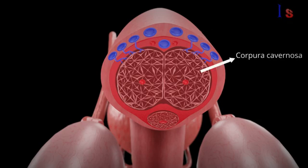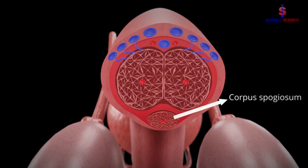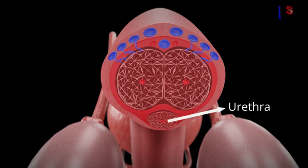In the middle part, there are two large tubes called corpora cavernosa. At the bottommost part, there is a tube called corpus spongiosum, which contains the urethra from where urine and sperm are ejaculated.